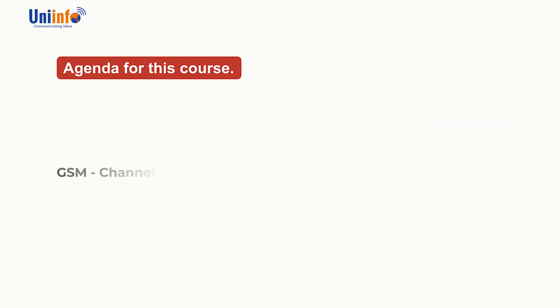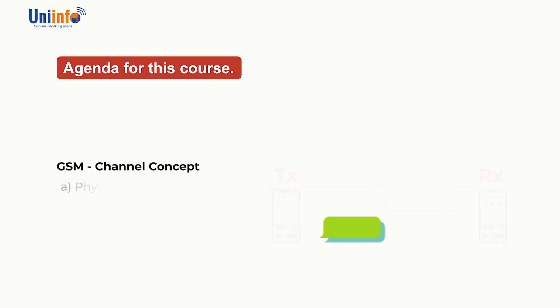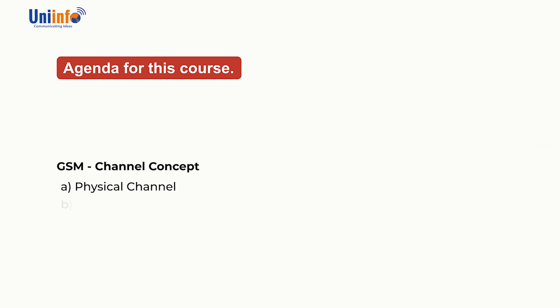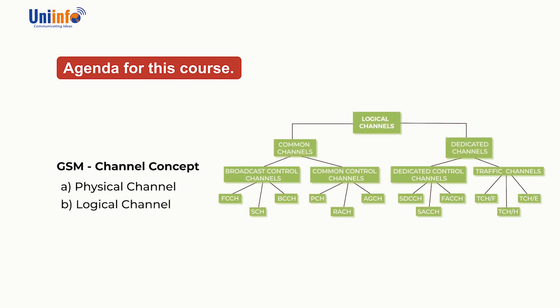GSM Channel Concept: A channel in a communication system is used for transmission and reception of voice or data. It is of two types: a Physical Channel, which is a physical medium over which information is carried (for example, wires), and a Logical Channel, which describes how information is carried over bandwidth.